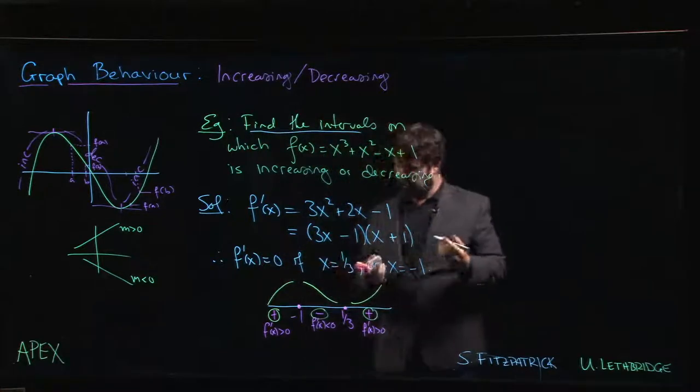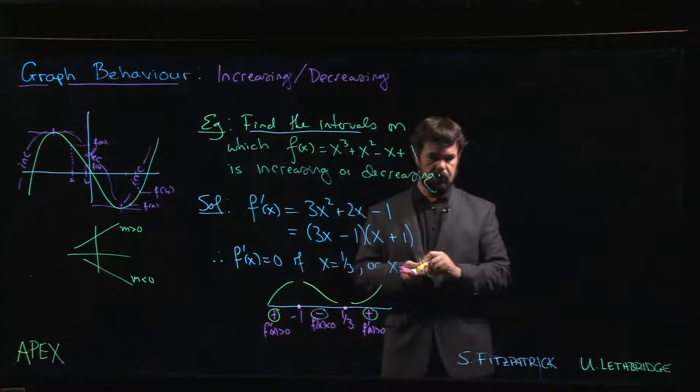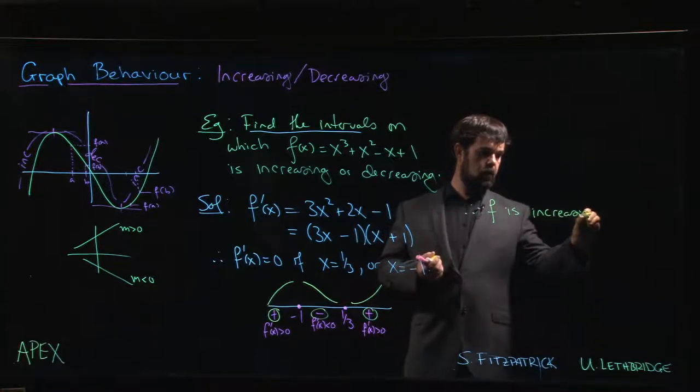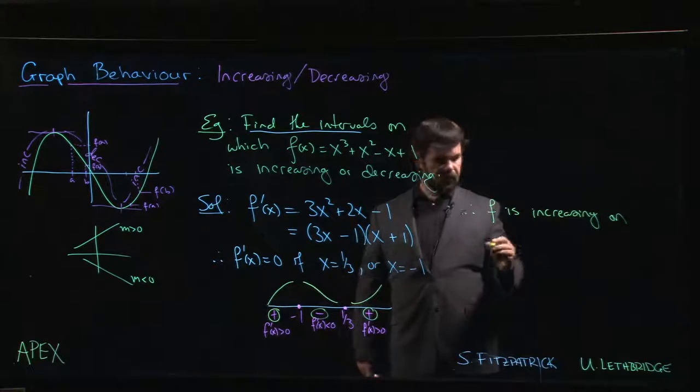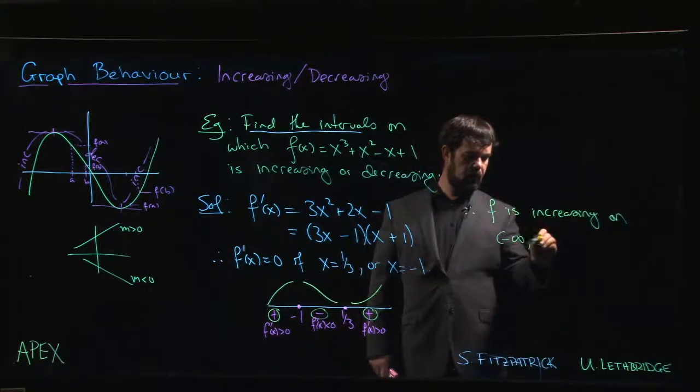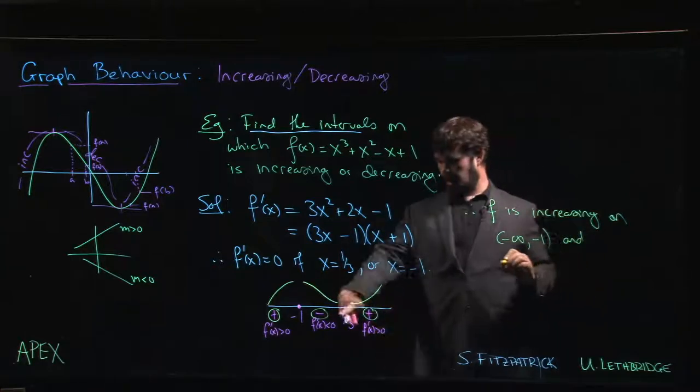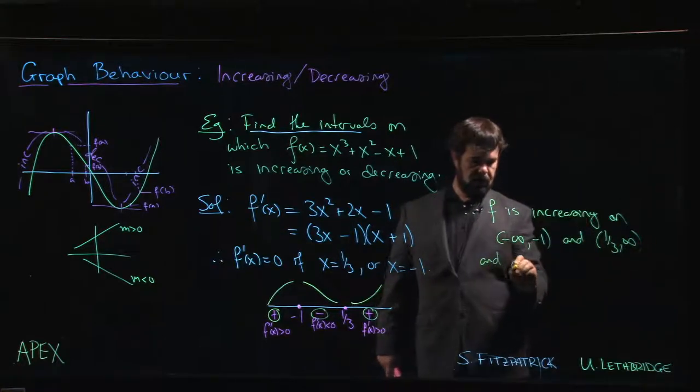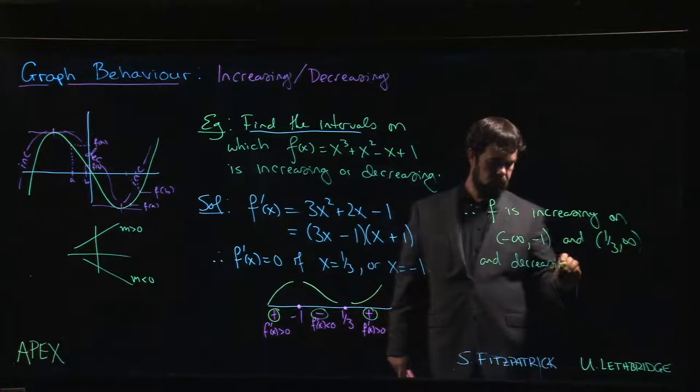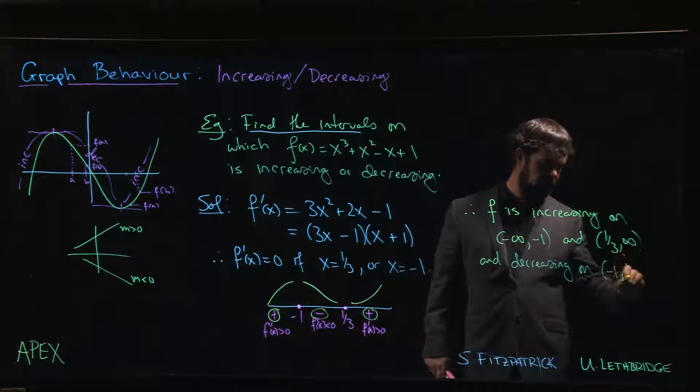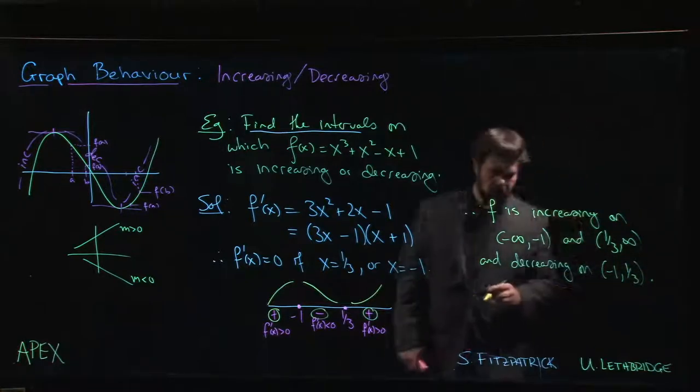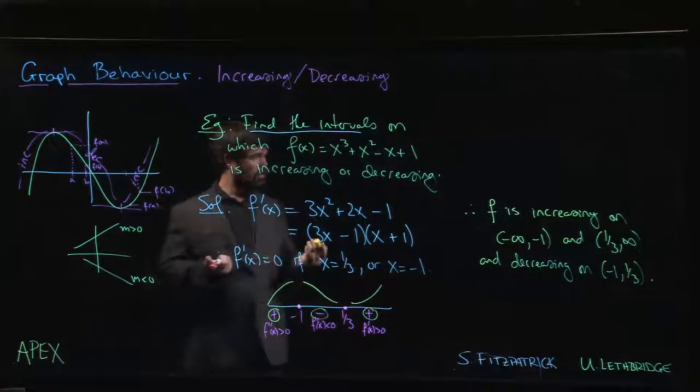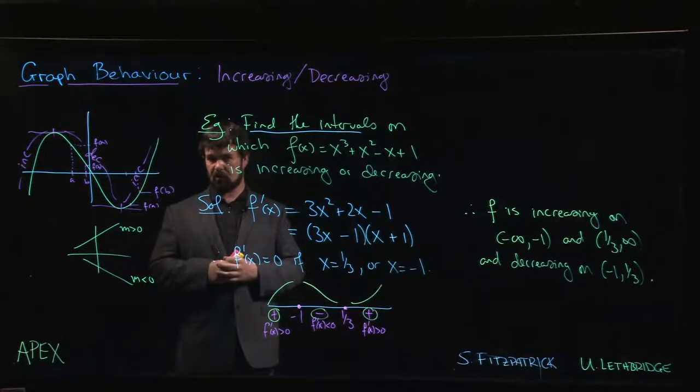Now we're not quite done, because what was the question asking originally? Find the intervals. So what do we conclude? We can conclude that f is increasing on, well, everywhere less than -1, so from -∞ to -1, and everywhere after 1/3, so from 1/3 to ∞. And it's decreasing on the interval from -1 to 1/3. Again, I think open intervals are probably the more appropriate answer here. If you put closed intervals, you're probably not going to be docked marks on a problem like this.